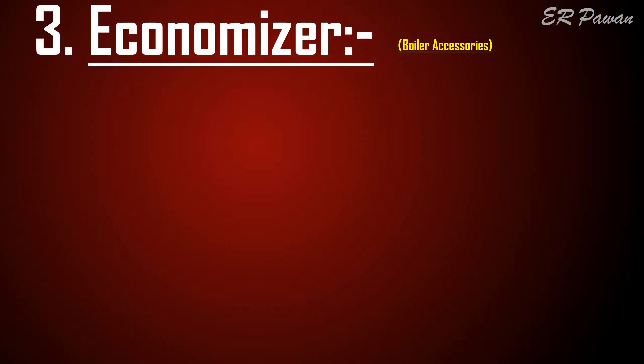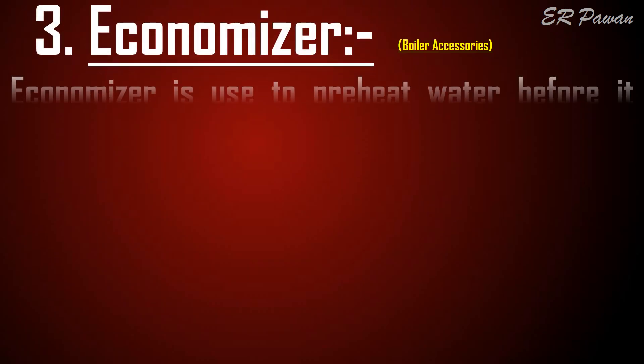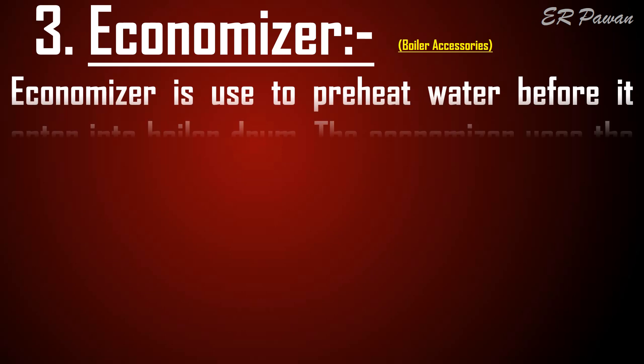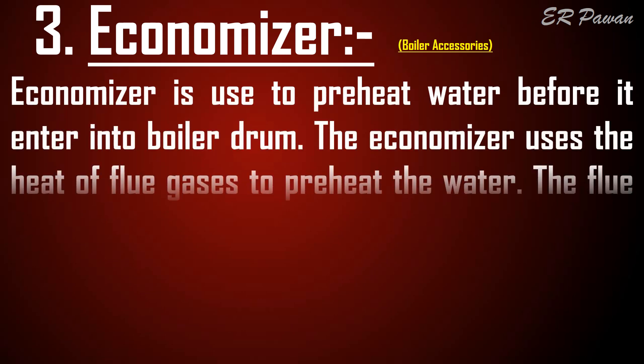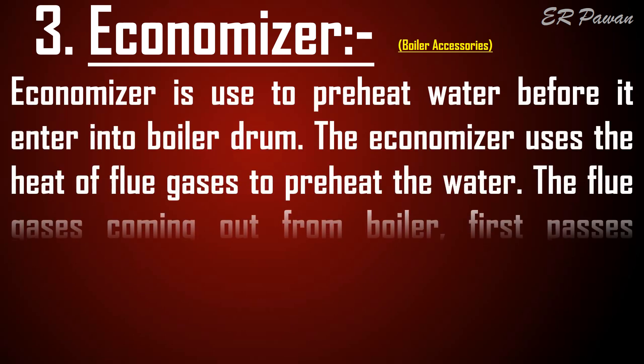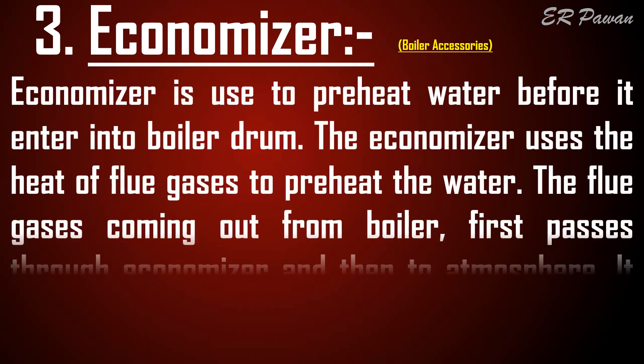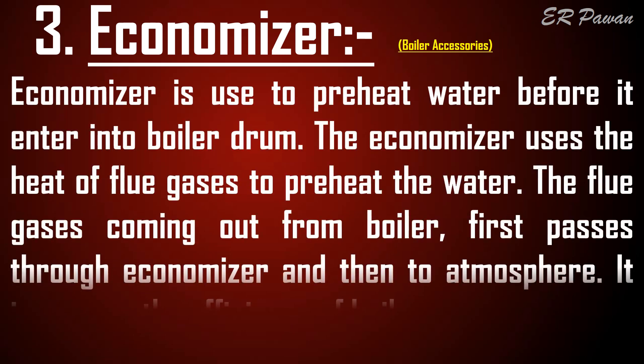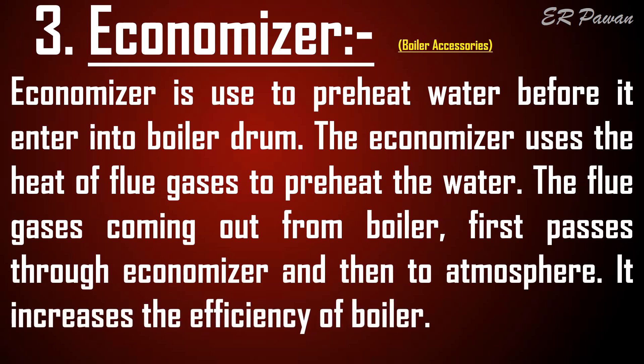Economizer. An economizer is used to preheat water before it enters the boiler drum. The economizer uses the heat of flue gases to preheat the water. The flue gases coming out from the boiler first pass through the economizer and then to the atmosphere, which increases the efficiency of the boiler.